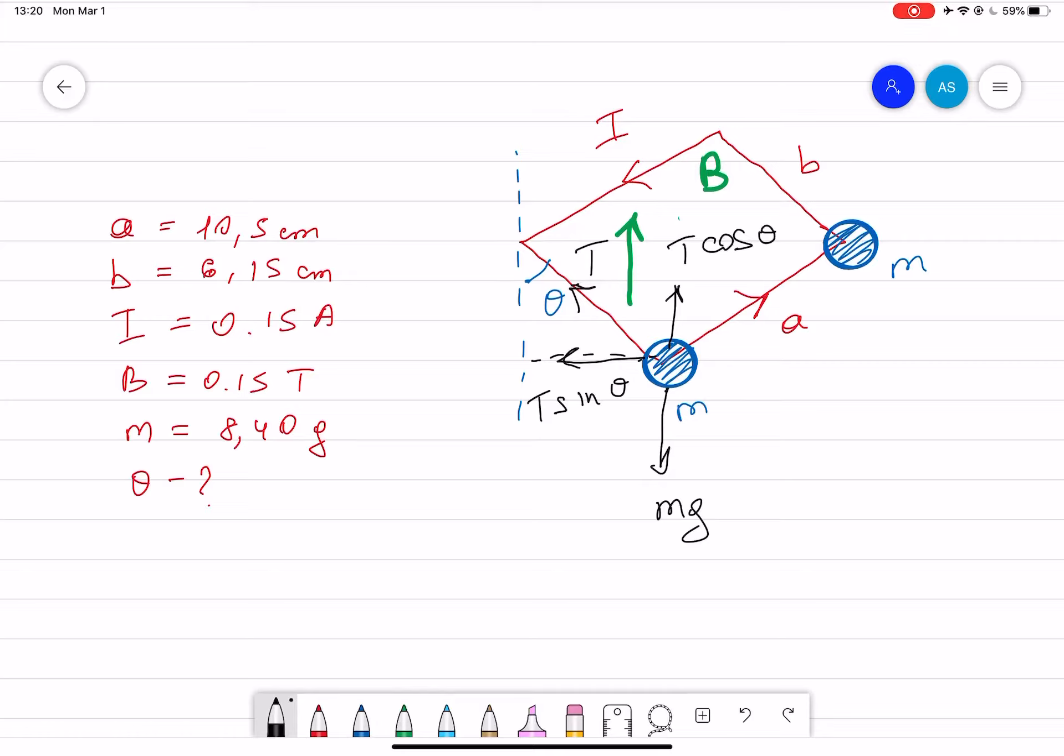Now, if you look at it particularly this side, this length, then we can see that there's a magnetic force on it acting. So if you use the right-hand rule then you can see that the magnetic force acting along all this length, pointing particularly to the right side. So I call this one FB.